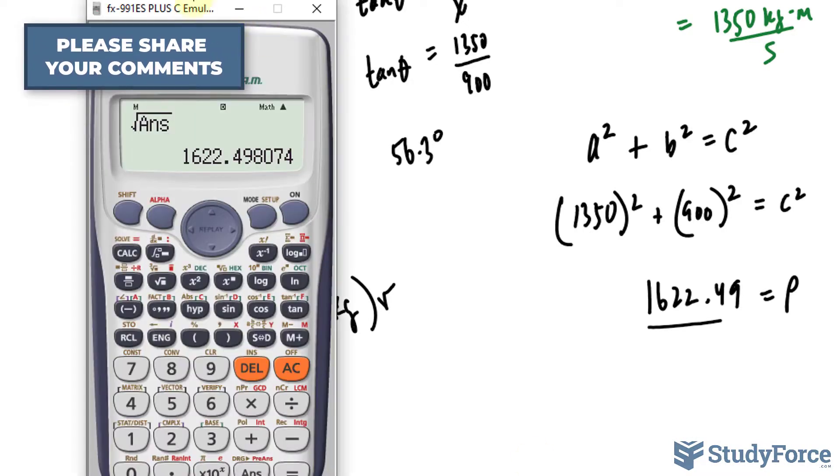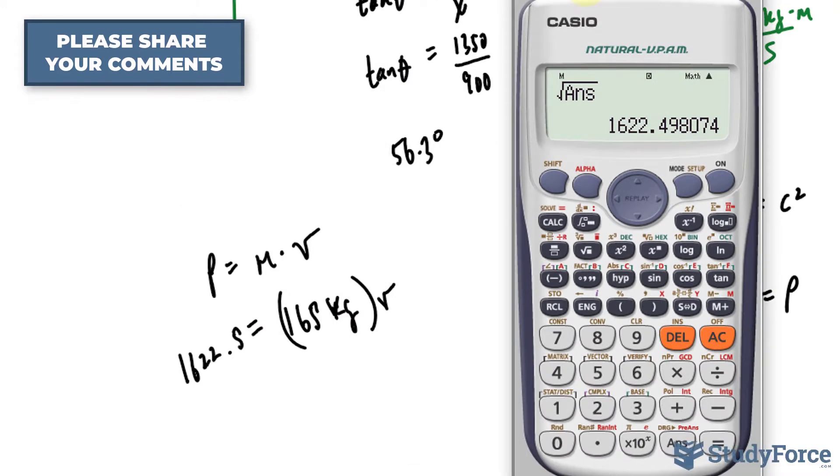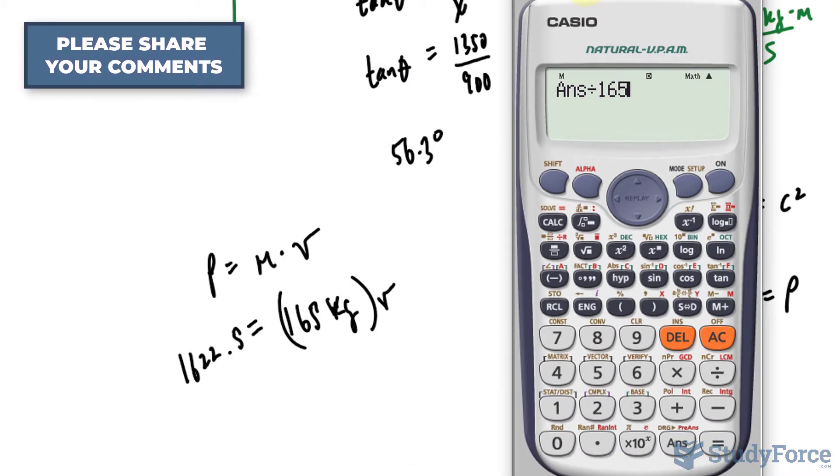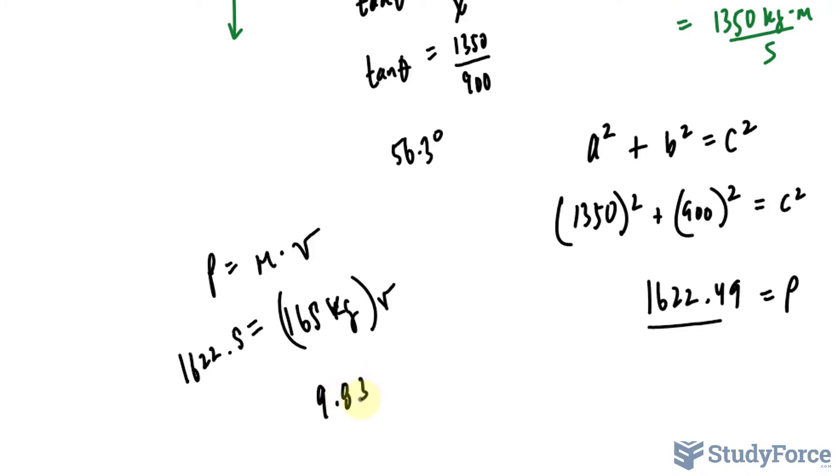Solving for v, we divide both sides by 165. So take that number on the screen, divide it by 165 and we get 9.83 meters per second.